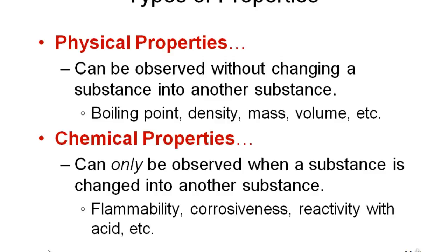Chemical properties can be observed when a substance is changed into another substance. For example, flammability — if you burn gasoline or natural gas, they are converted into something else, mostly carbon dioxide and water. Something is converted into new substances — that is a chemical property. Corrosiveness is another example: a shiny iron nail left in a moist atmosphere develops a brown layer of rust, which is iron oxide — a different substance. Such properties are called chemical properties.